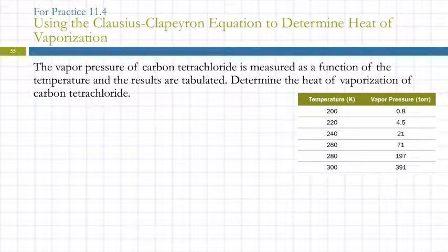So let's do an example. The vapor pressure of carbon tetrachloride is measured as a function of the temperature and the results are tabulated. Determine the heat of vaporization of carbon tetrachloride. So here we have temperature and here we have pressure in Torr. This one's a real hard one to do on the iPad. We have to graph this data and find the linear regression line for it. So I'm going to pause this while we do that.